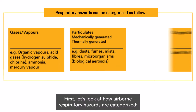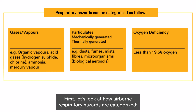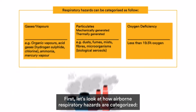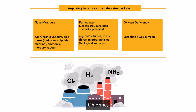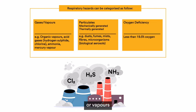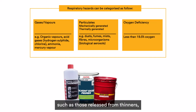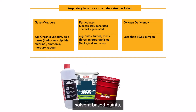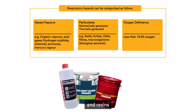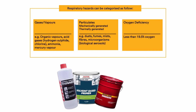Let's look at how airborne respiratory hazards are categorised. Gases, for example ammonia, chlorine or hydrogen sulphide, or vapours such as those released from thinners, solvent-based paints, glues and resins.